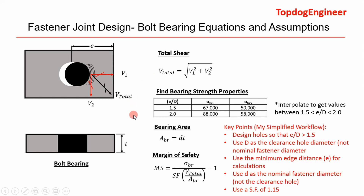In bearing failure, you have a bearing strength property that's usually derived experimentally — you'll need to look these up in tables for certain materials. Your bearing strength is a function of your edge distance E, which is from the center of your clearance hole to the edge of the material, divided by the diameter of your clearance hole D. We use the clearance hole diameter because it's more conservative. In practice, you want to design so that your E over D is greater than 1.5 — anything less is risky under dynamic loads.